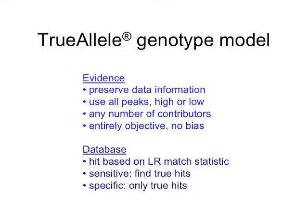The method I'm talking about is genotype modeling. Other groups have done it; we've been doing it for 15 years, and TrueAllele is a version of that. The concept is: how do you explain the data by considering the genotypes that could construct it? From an evidence perspective, the goal is to preserve data information — to work as hard as it can, even if it takes days, to retain all the information in a five-person mixture. It uses all the peaks, high or low, essentially has no thresholds, works from data, and doesn't make arbitrary decisions. It can use any number of contributors. The method is completely objective — it never sees a suspect or comparison reference. It can't be biased because it doesn't know what you're looking for.